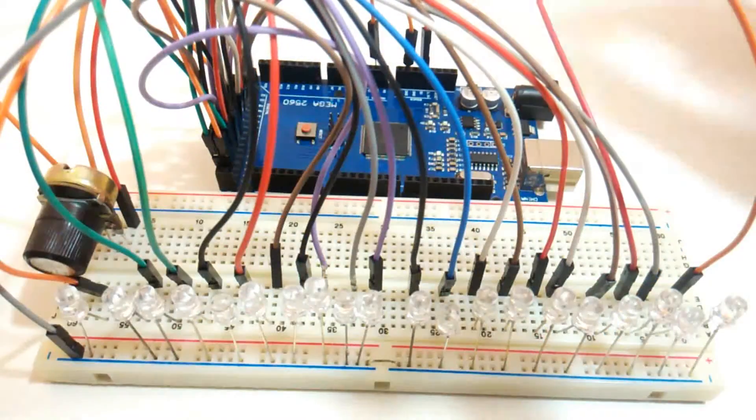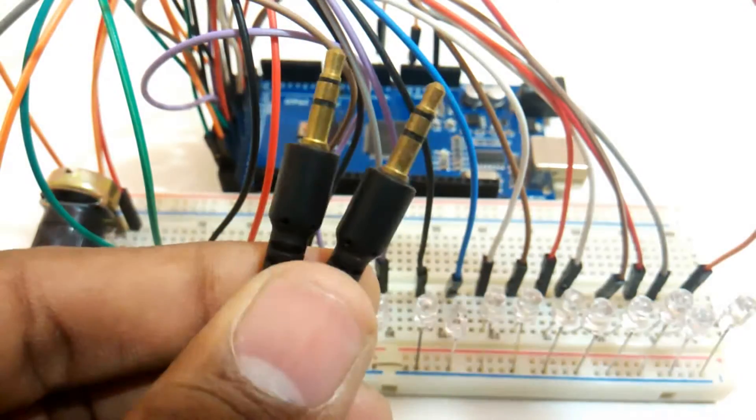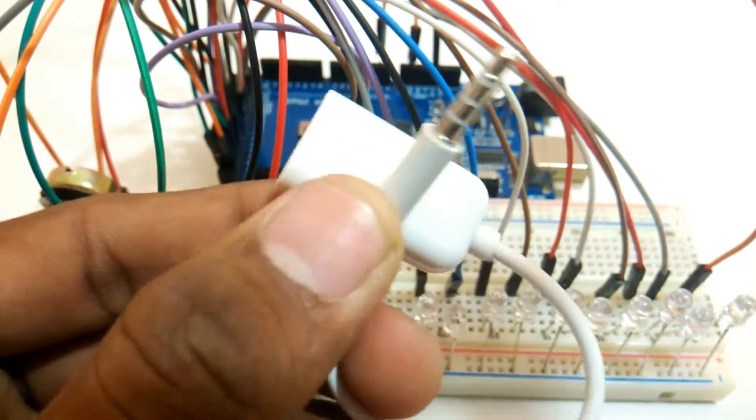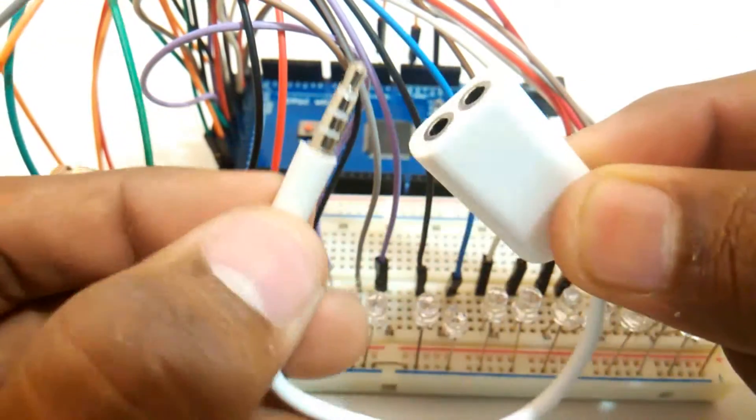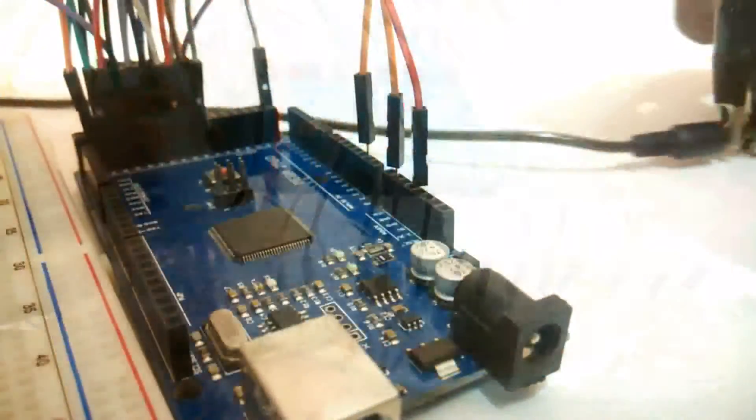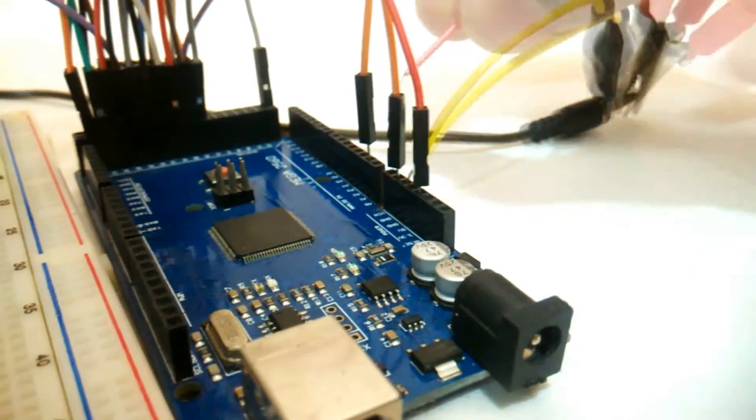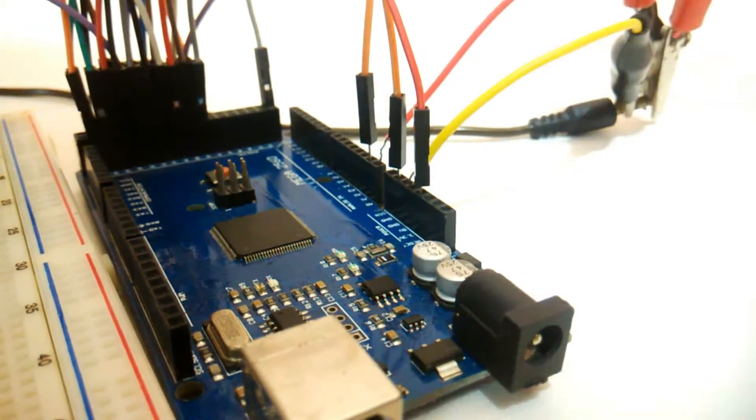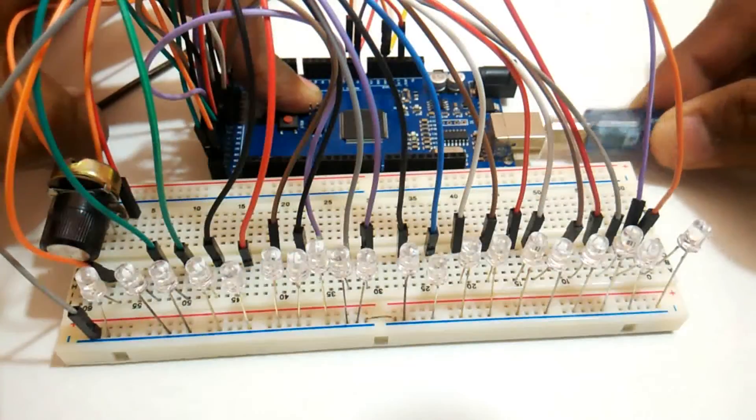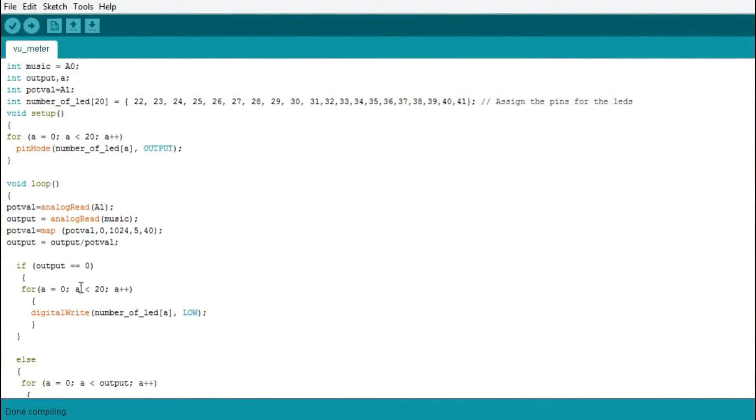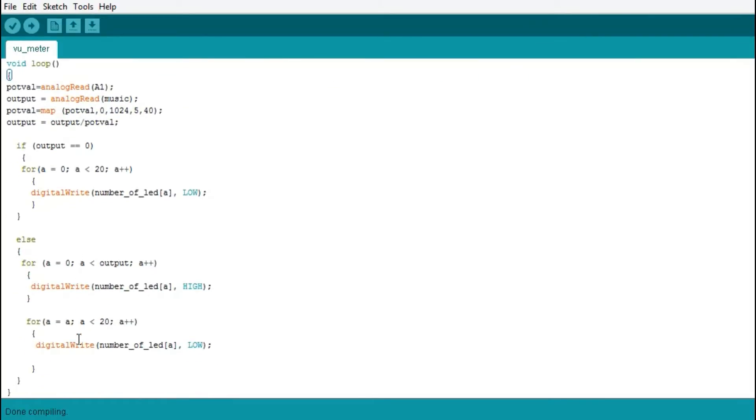The next thing we need is an audio source, which we can find from an aux cable, and we'll be using an audio splitter so that we can hear as well as visualize the music. From the aux cable, the left channel will go to A0 and the ground will go to ground. Now it's time to connect the Arduino to the PC by using the A to B cable. The program is quite easy and understandable, but if you have doubts you can always ask in the comment section. Now we are going to upload the code and test it.